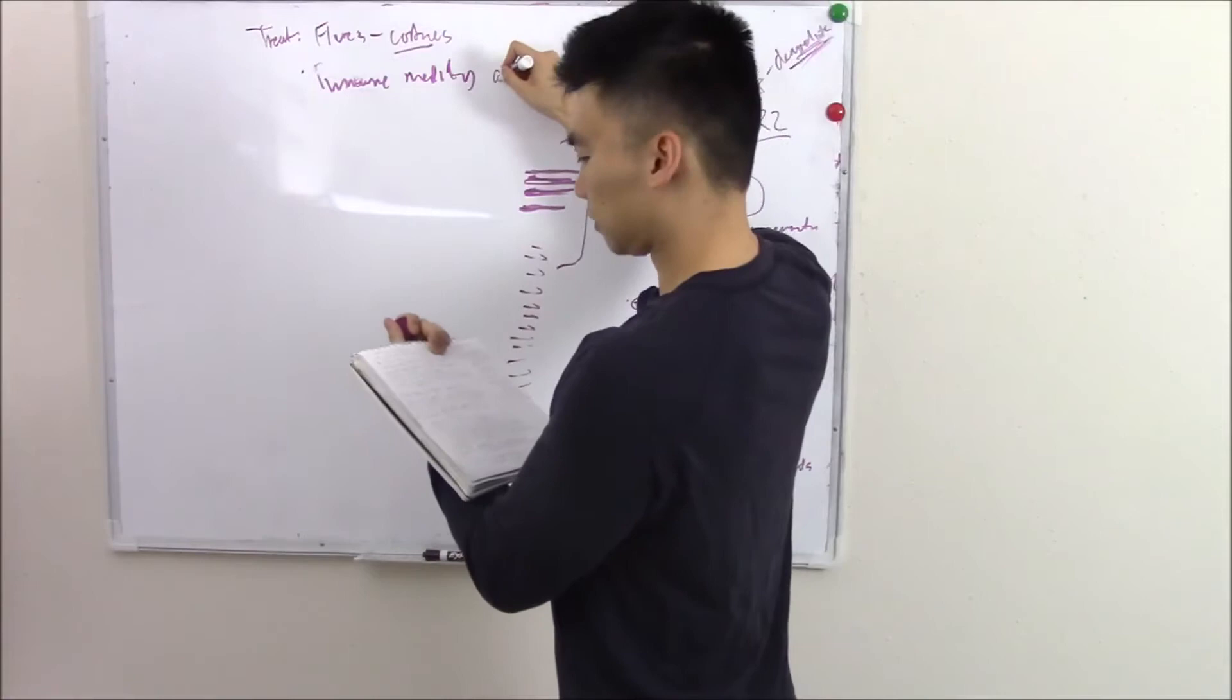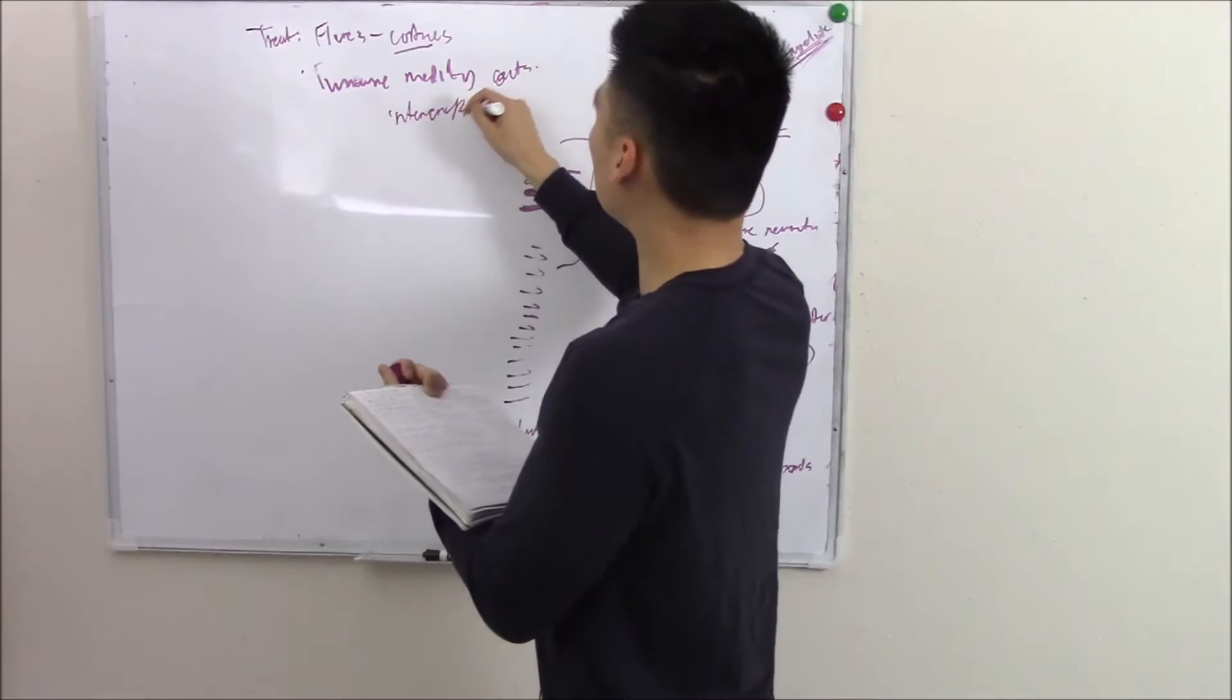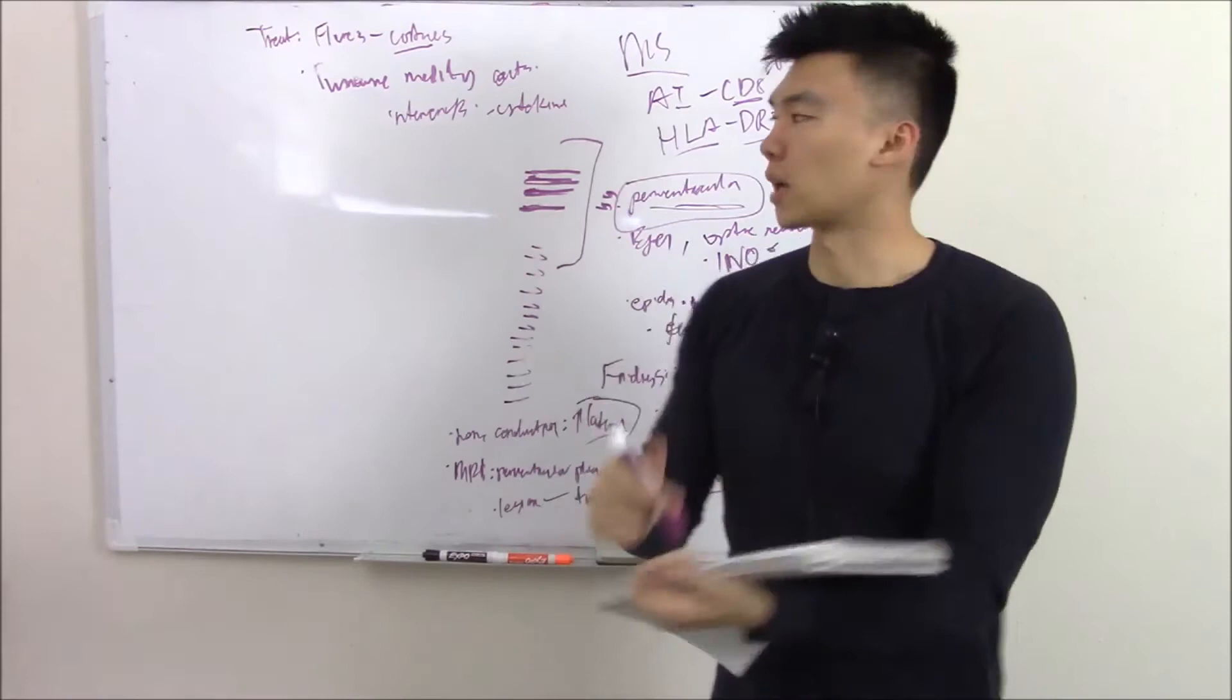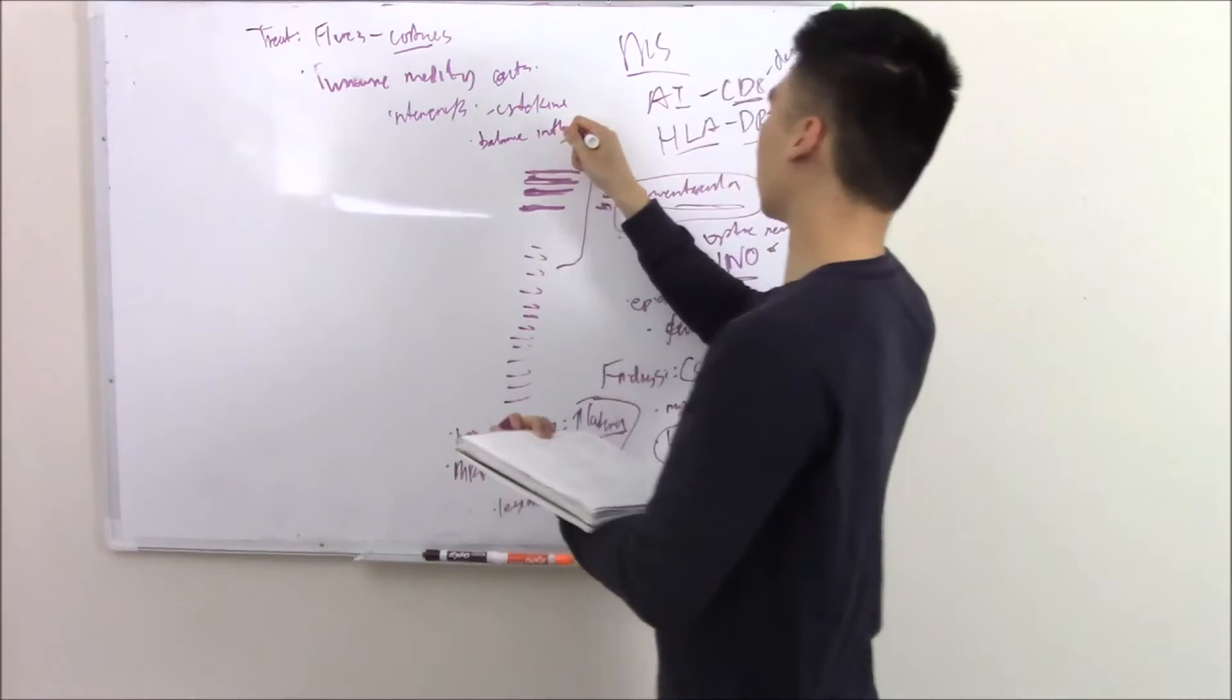You can use interferon beta. Interferon beta is a cytokine, and the purpose of interferon beta is to regulate pro-inflammatory and anti-inflammatory, so it brings that back to balance. You're not having too much pro-autoimmune inflammatory attack, so you bring it back to balance inflammation.